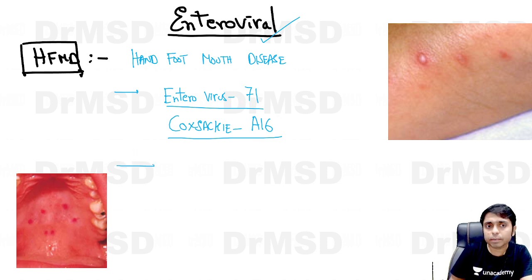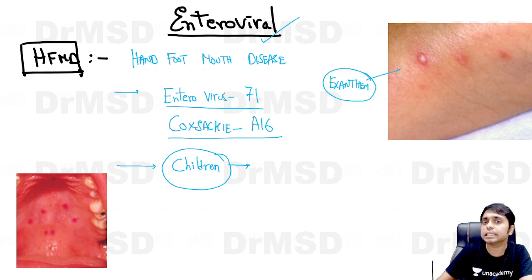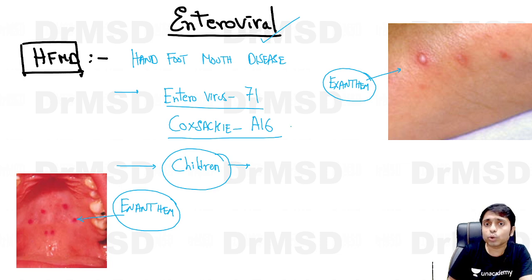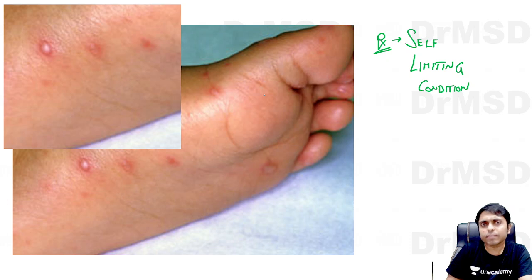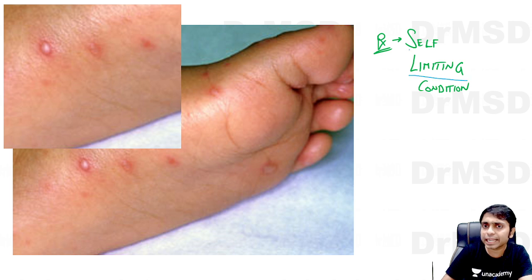The disease usually presents in children, where there will be an exanthem — a rash over the skin in the form of papulovesicles on the palms and soles — and also an enanthem, that is a virus-associated sore or ulcer in the oral mucosa. If parents ask about treatment, counsel them that this is a self-limiting condition which does not need any specific treatment and will resolve on its own.